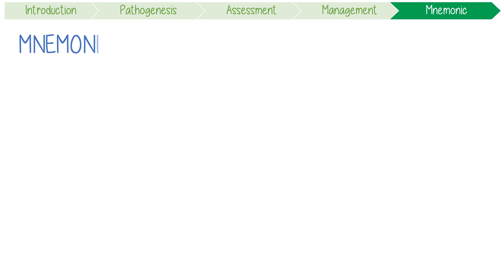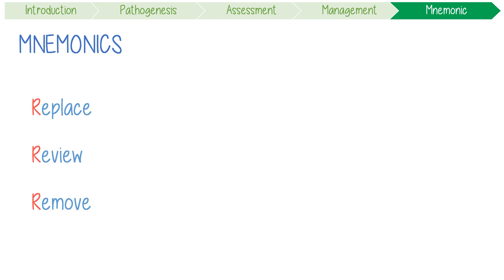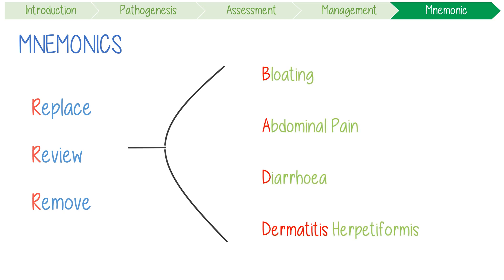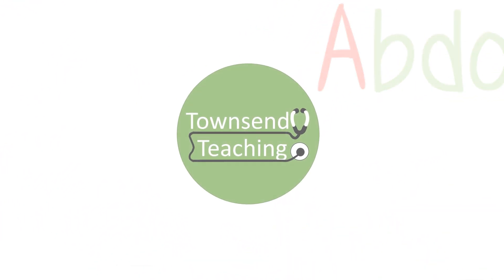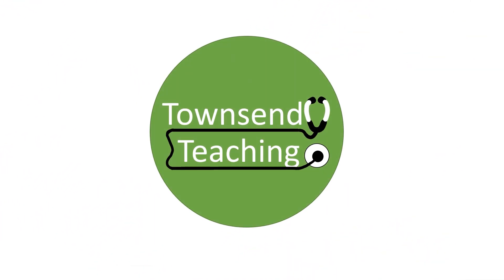To recap with mnemonics: to remember its management, think of the three R's — Replace, Review, and Remove. Replace micronutrients, review and screen for other autoimmune diseases, and remove all gluten. And don't forget that BAD Dermatitis features should always prompt celiac screening. Thanks for watching, Townsend Teaching.